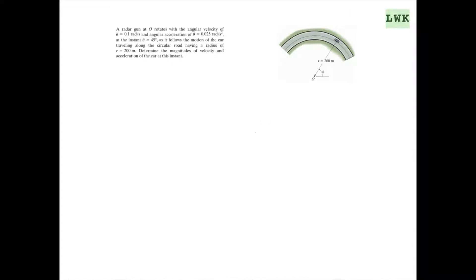Let's look at a problem in polar coordinates. A radar gauntlet O rotates with an angular velocity of θ̇ = 0.1 radians per second and an angular acceleration of θ̈ = 0.025 radians per second squared. At the instant θ = 45 degrees, as it follows the motion of a car traveling along a circular road with radius r = 200 meters, determine the magnitudes of the velocity and acceleration of the car at this instant.